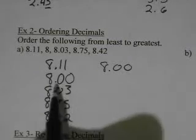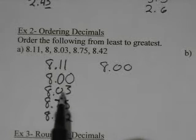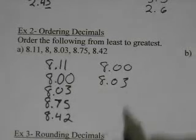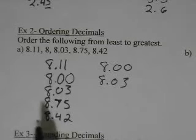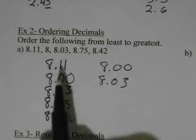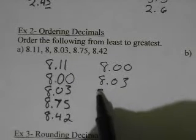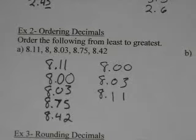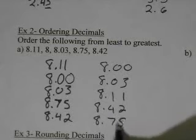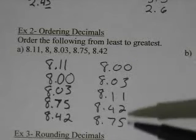Then you start all over again. So ones is the same. Out of the tenths place, well again, 0 is the smallest, and since we've used this one up, it has to be 8.03 for the next smallest. Next, going back to the ones place, they're the same. Okay, tenths place, we have a 1, a 7, and a 4. Well, the 1 is obviously smaller than 7 or 4. So that is our next smallest. Going up to 8.42 is the next, and finally, 8.75 is the largest. So these are my fractions in order from the smallest to the largest.